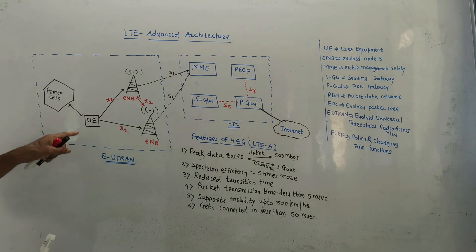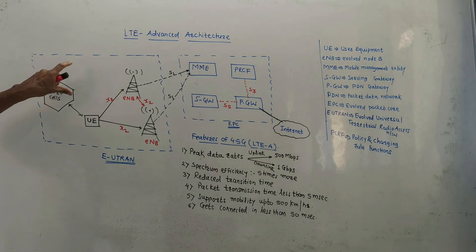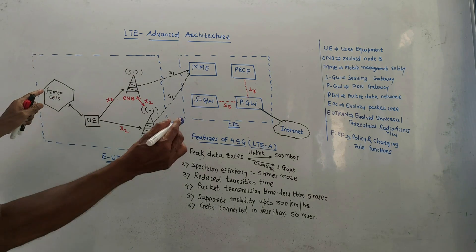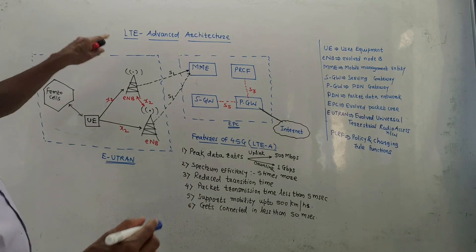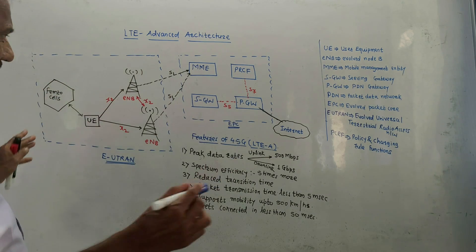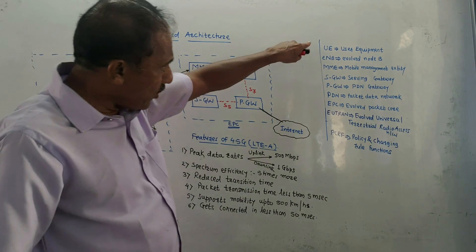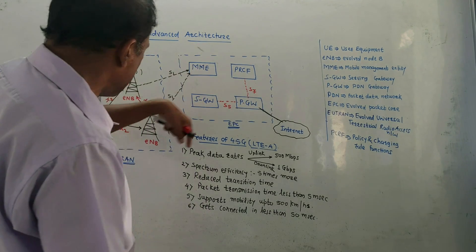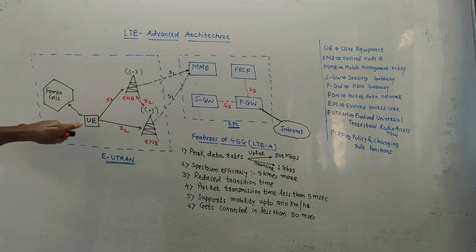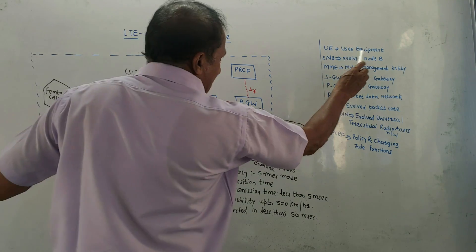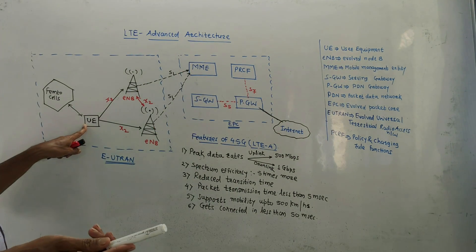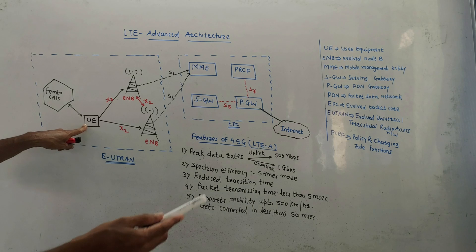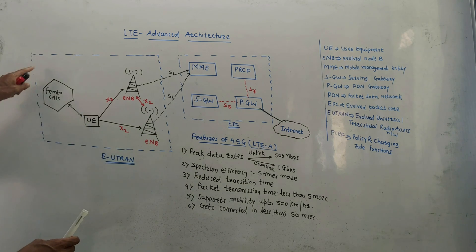This is the architecture diagram for the LTE Advanced network. It is very much similar to the earlier normal LTE architecture, with slight differences. I have written the meaning of each and every notation used in this architecture. UE is user equipment — we already discussed this in the last video. An additional block shown here is the femto cell.